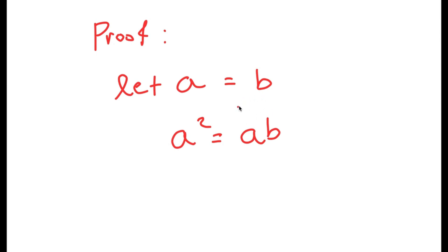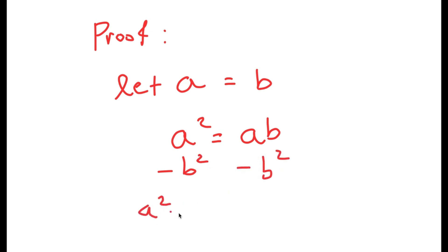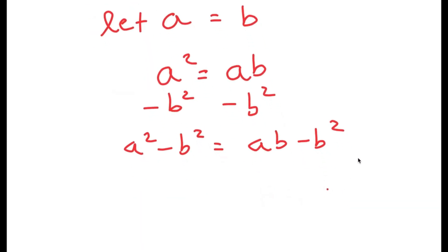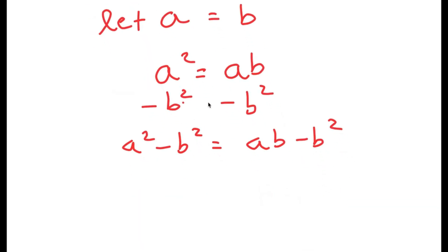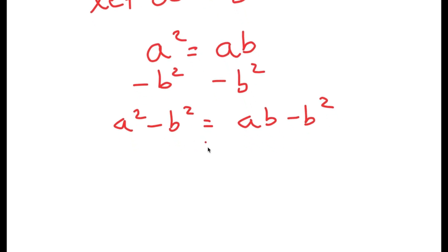Now what I'm going to do is subtract b squared on both sides. So I get a squared minus b squared is equal to a times b minus b squared. There's nothing wrong with this as well — all I did was subtract b squared on both sides.